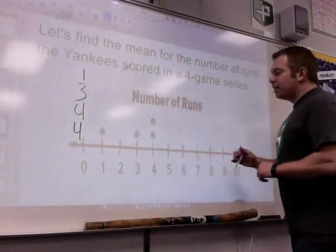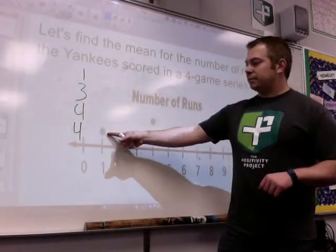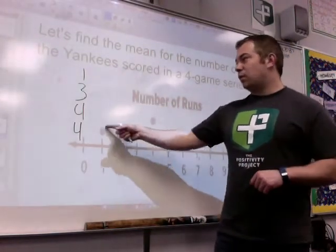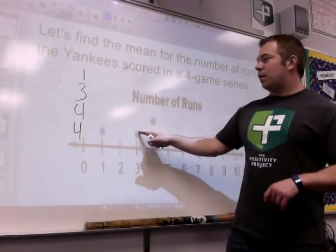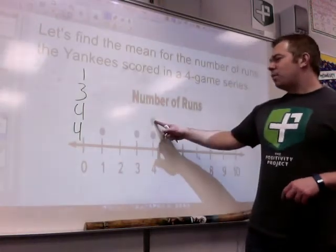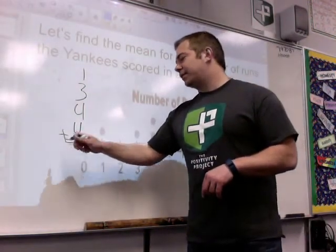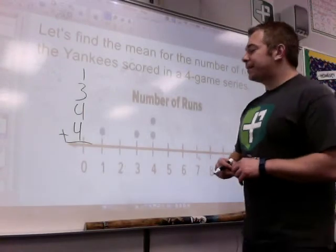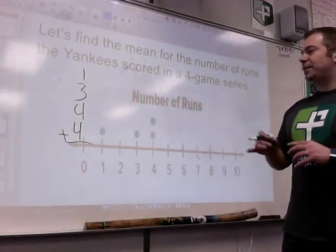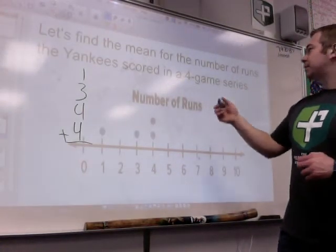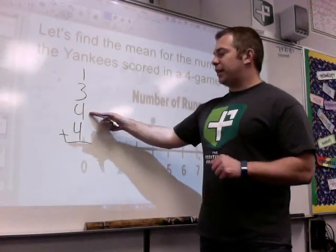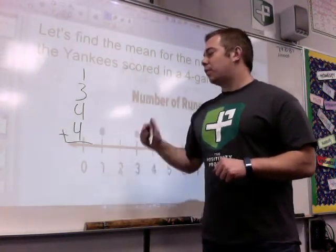So I'm going to put four down twice. If I look at this dot plot, they scored one in one game. Let's say they won 1-0 that game. This game, they won 3-0. This game, they won 4-0. And in that game, they won 4-0. So the total amount of runs, because the Yankees don't give up runs. The total amount of runs the Yankees scored in a four-game series was 4 plus 4 is 8, plus 3 is 11, plus 1 more is 12.